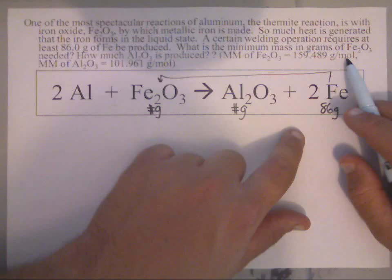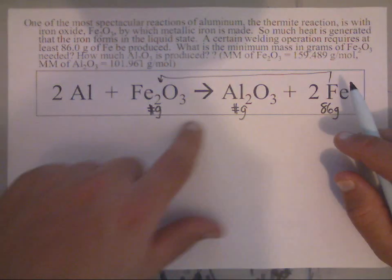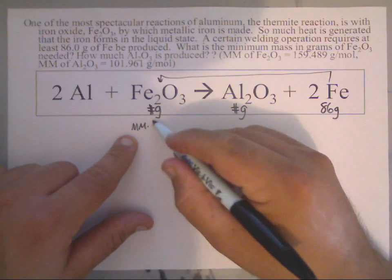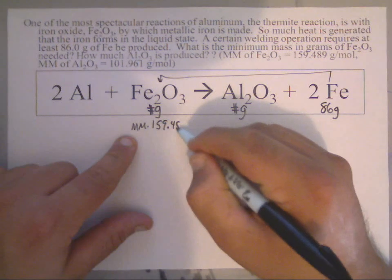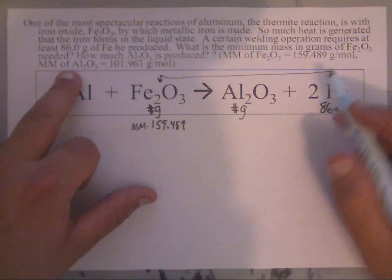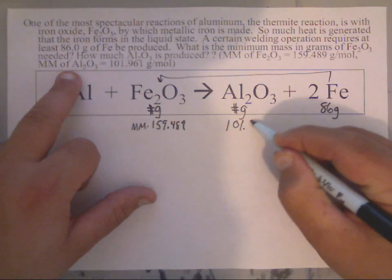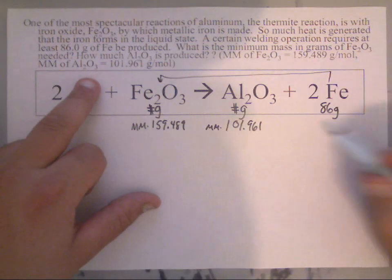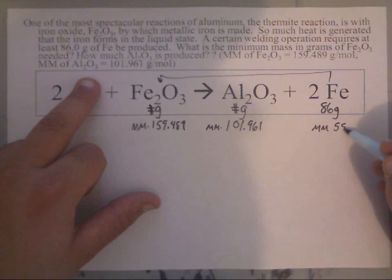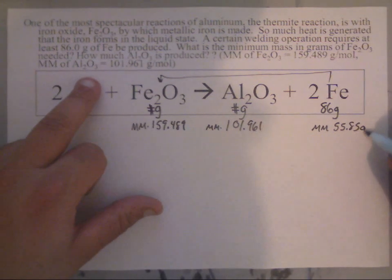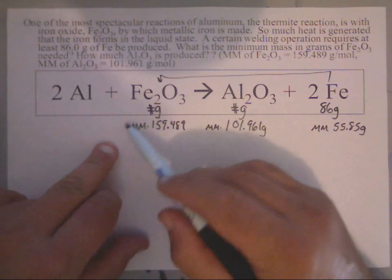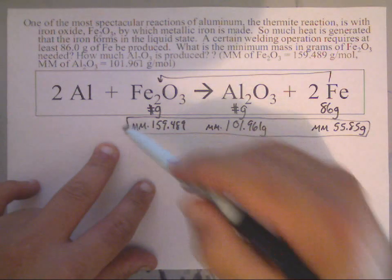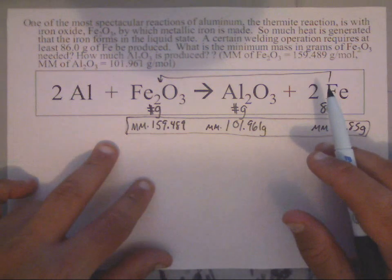They told us the molar mass of Fe2O3 was 159.489, the molar mass of Al2O3 is 101.961, but they never did tell me the molar mass of Fe. That's on your periodic table. The molar mass of Fe is 55.85. Don't forget, all these are grams. These are my molar masses I got off the periodic table.